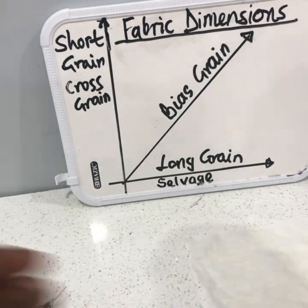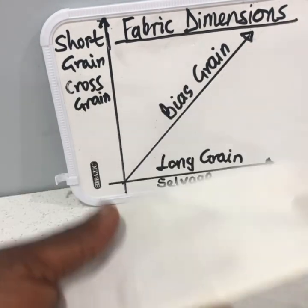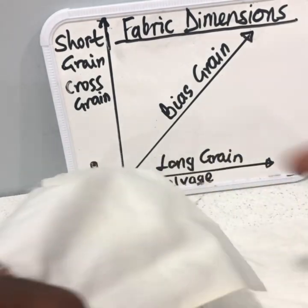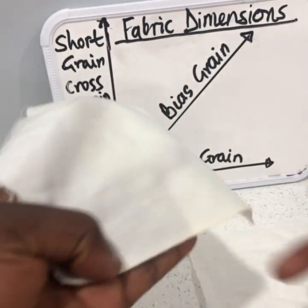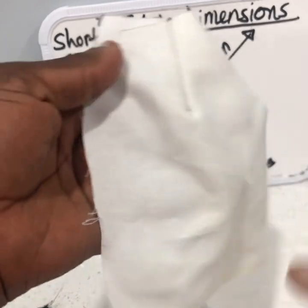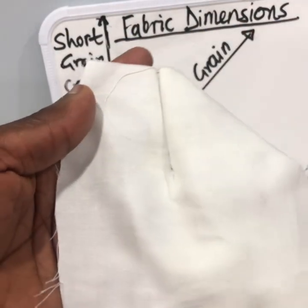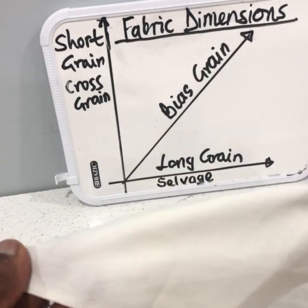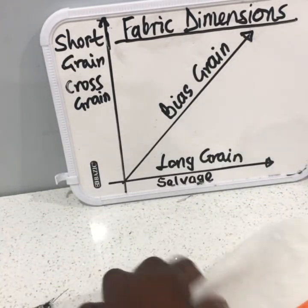When you take a fabric you cannot be confused — you look for the selvage, and you know that all the other threads moving in that direction are the long grain, and those that move this way are the short grain. The bias will be the diagonal.